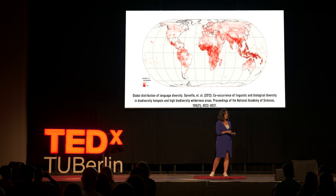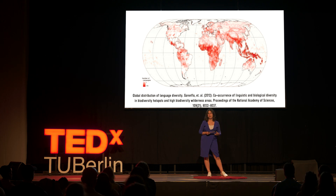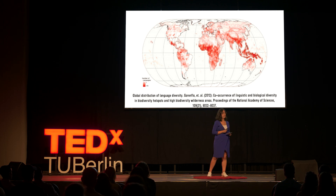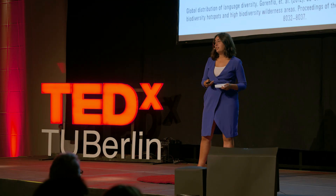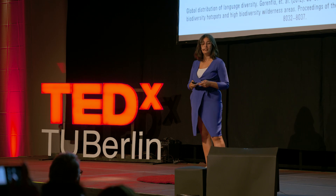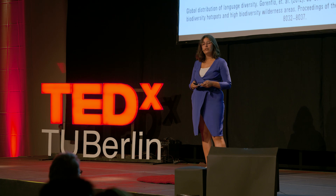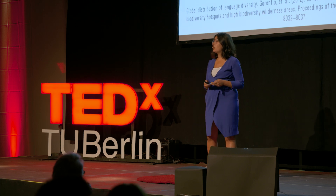Now, here we see a different type of diversity, which shows almost identical concentrations in Central Africa, the Amazon Basin, the Neotropics, South and Southeast Asia, and the Pacific region. What type of diversity could this be? Well, it's language diversity. The geographic distribution of the world's languages is strikingly uneven and follows the same patterns as biological diversity.